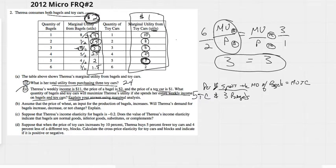Now remember, the five toy cars and three bagels gives you one point. The explanation is another point. Per dollar spent, the marginal utility of bagels equals the marginal utility of toy cars. Three is going to equal three.